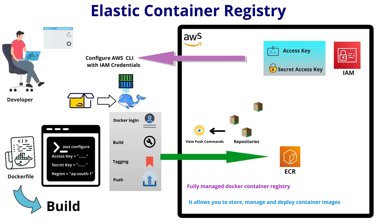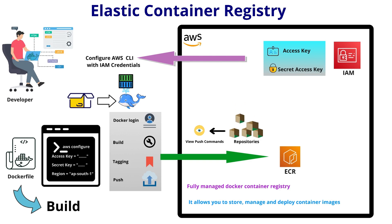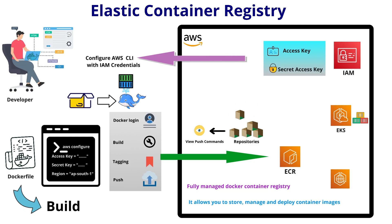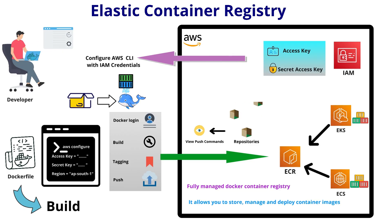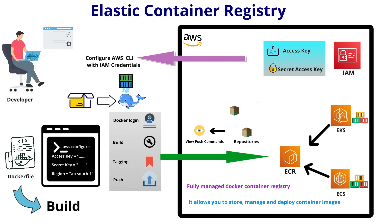Finally, he pushes the Docker image to the ECR repository. Now the image is securely stored in ECR and ready to be used. Services like ECS and EKS — which means Elastic Container Service and Elastic Kubernetes Service — can now pull the image directly from ECR to deploy containers at scale.